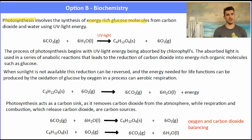Photosynthesis involves the synthesis of glucose from carbon dioxide and water. It's a high energy molecule or an energy-rich molecule. We have 6CO2, 6H2O, produces one glucose and 6O2. The process of photosynthesis begins when UV light is absorbed by chlorophylls. The light absorbed undergoes a series of anabolic reactions that leads to the reduction of carbon into energy-rich molecules.